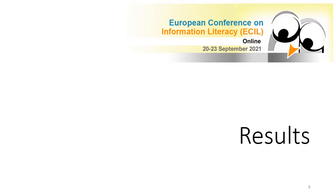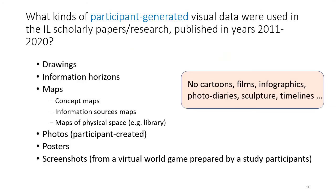We would like to present very briefly the most important results of our research. In our first research question, we were interested in what kinds of participant-generated visual data were used in information literacy papers published between 2011 and 2020. The outcomes of our analysis are arranged alphabetically, but the most commonly used participant-generated visual data concern participant-created photos, then information horizons and drawings.